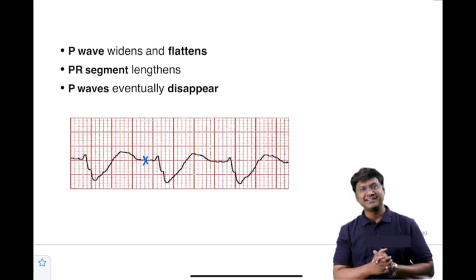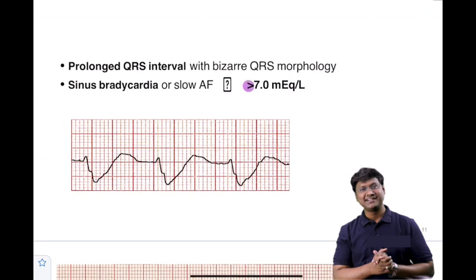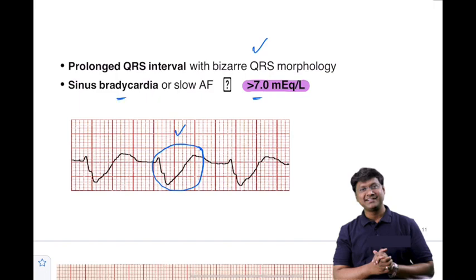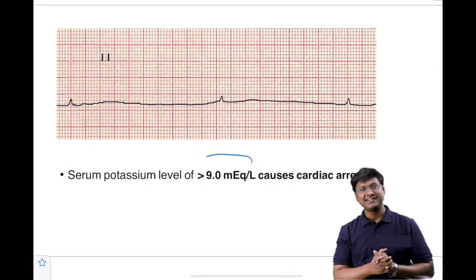As potassium levels increase further, the P wave becomes wide and flattened, the PR segment lengthens, and eventually the P wave completely disappears. When potassium levels exceed 7 mEq/L, you will observe a wide or prolonged QRS interval with bizarre or abnormal QRS morphology, along with bradycardia. At potassium levels above 9 mEq/L, the individual can develop cardiac arrest.